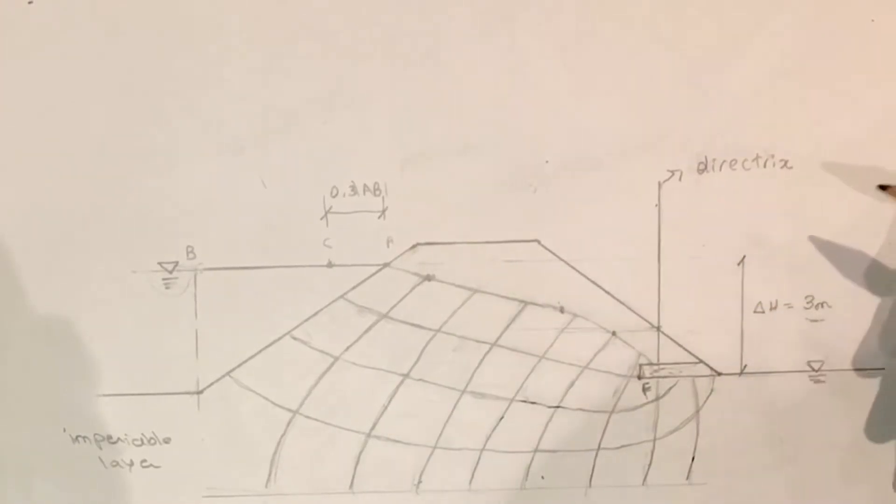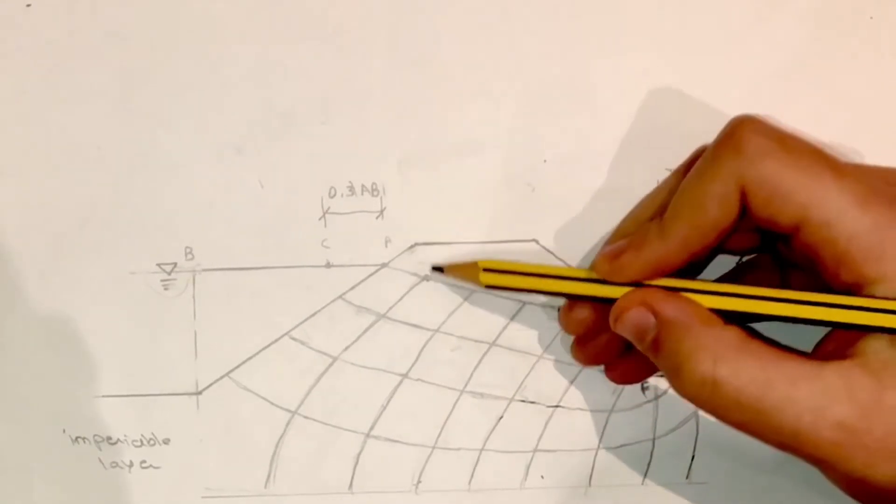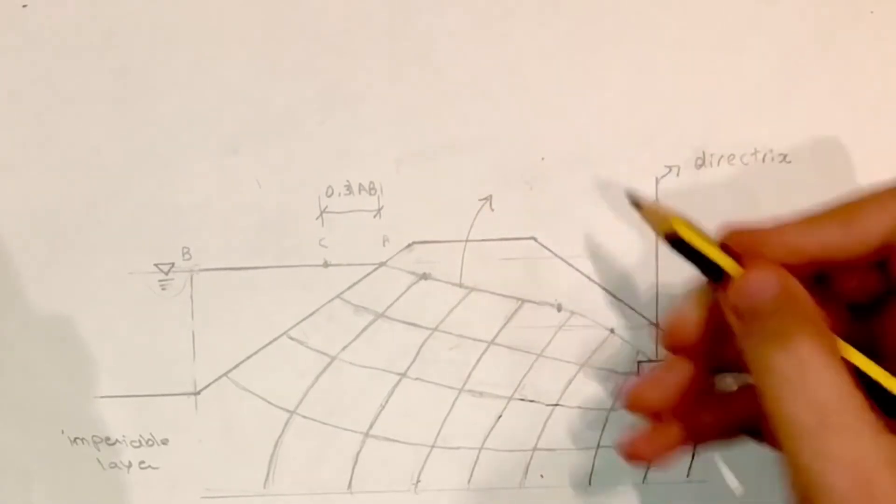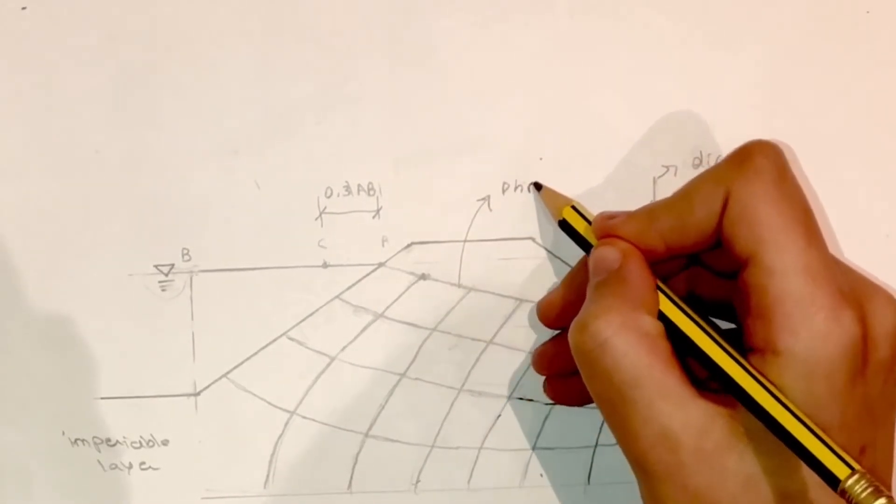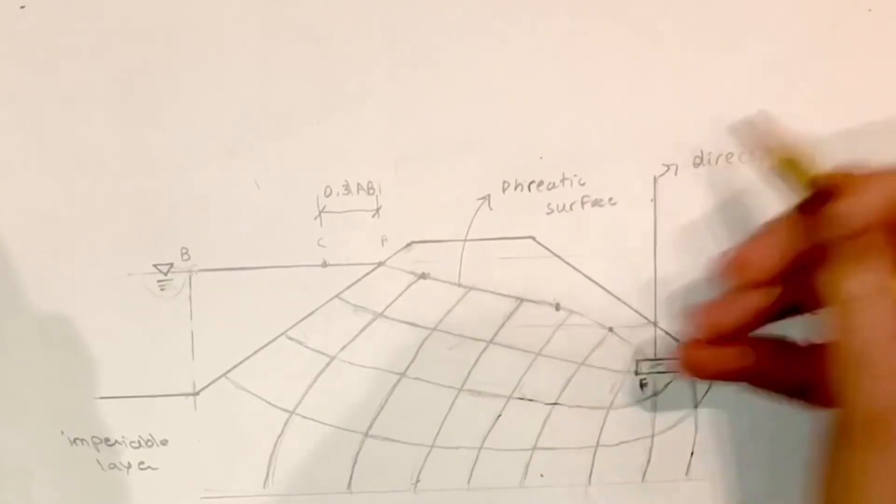And that line is very important because it then gets us those points along the phreatic surface and then we join them to get the first flow line in the flow net.